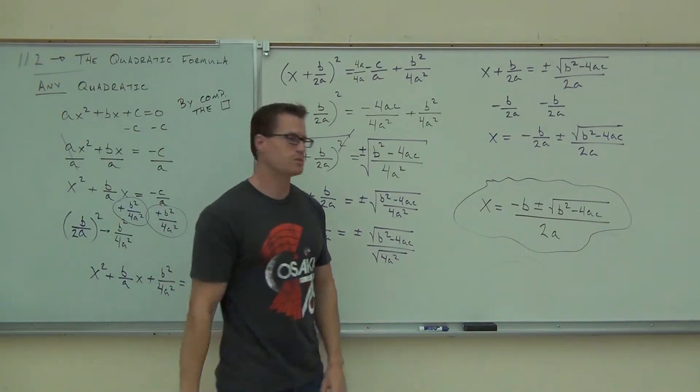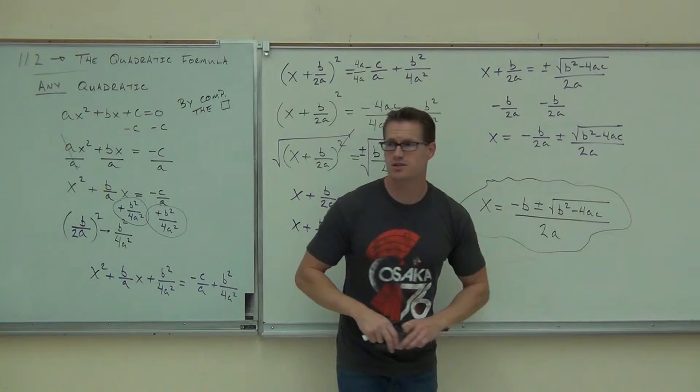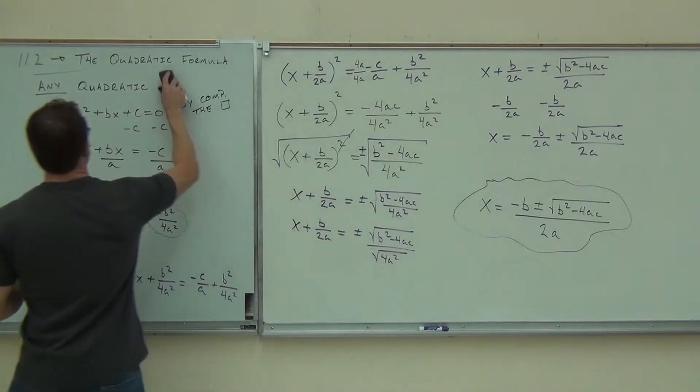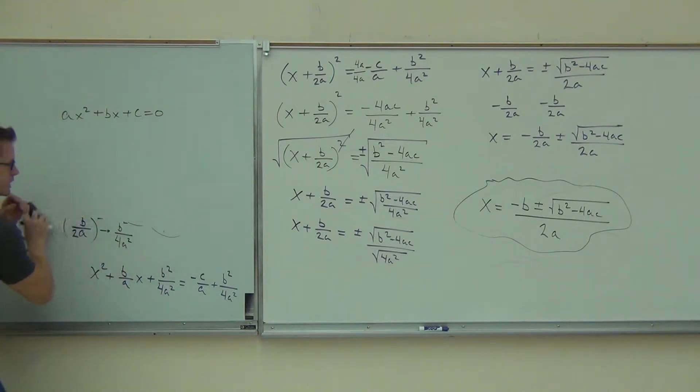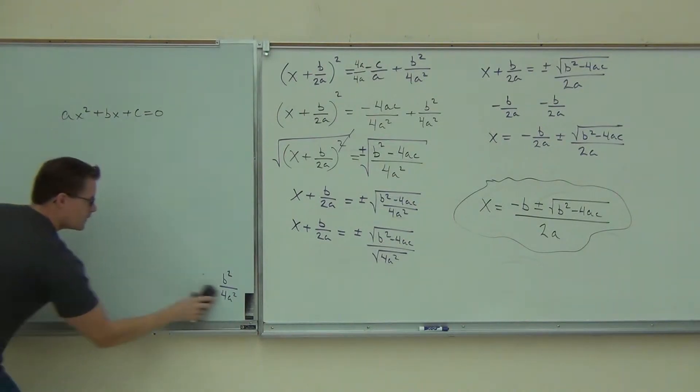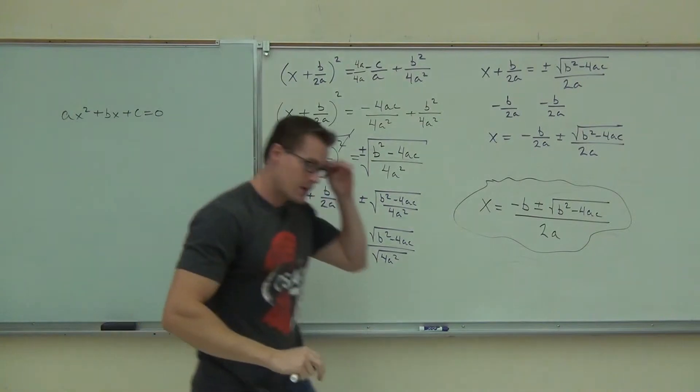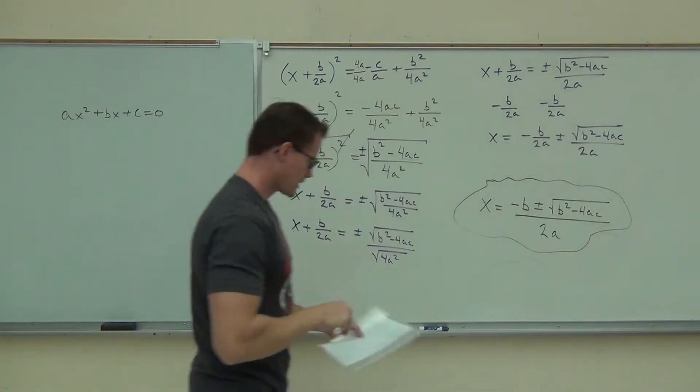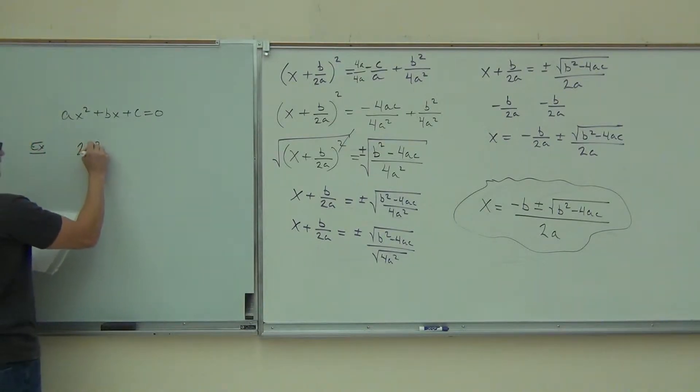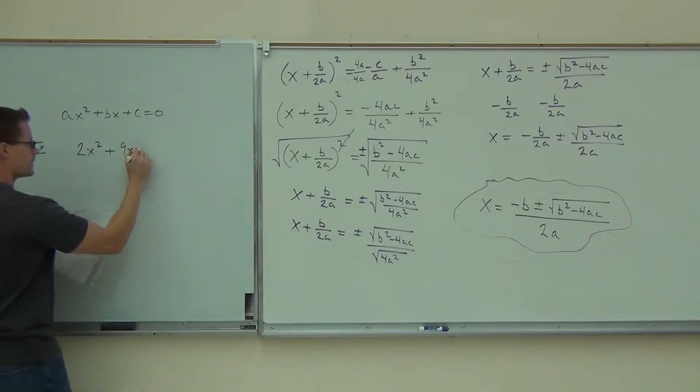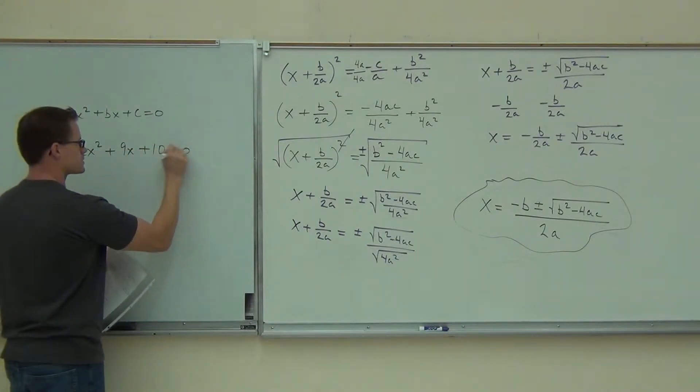Let's do one example. I'll give you a way to memorize this formula and we'll be done. So I'm going to leave the quadratic formula on the board over there. We're going to identify that any of these problems can be solved with that. For example, 2x squared plus 9x plus 10 equals 0.